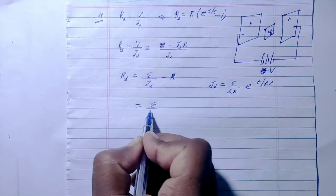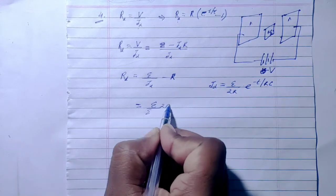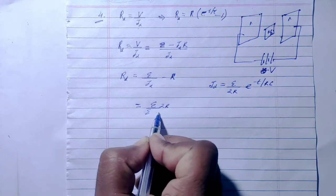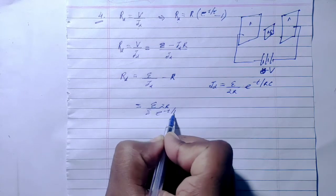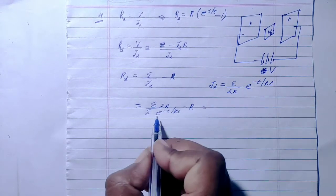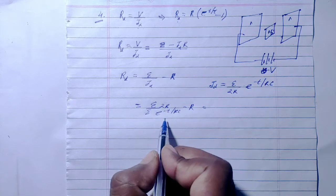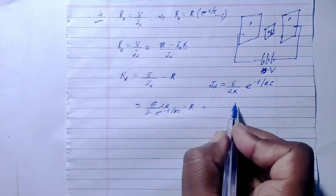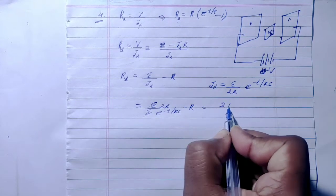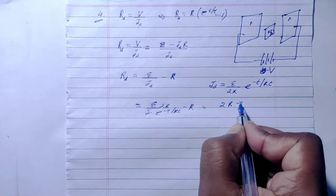EMF cancels out here. We get 2R × e^(t/RC) - R. Taking R common, we have R_d = R(2e^(t/RC) - 1).